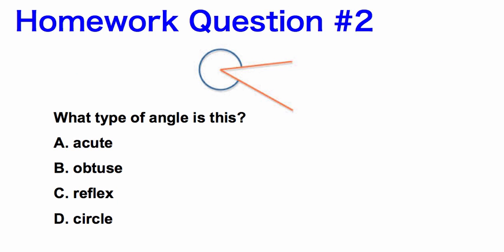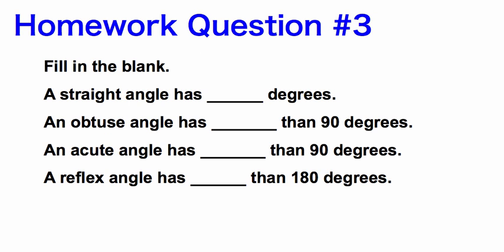Homework question two: What type of angle is this? Homework question three: Fill in the blank. Go ahead and read through each of these statements and write your answers in order — one, two, three, and four. Then when you get to the Google form, you're going to find the answer that has your answers in order.